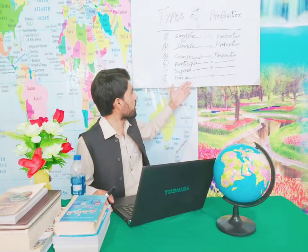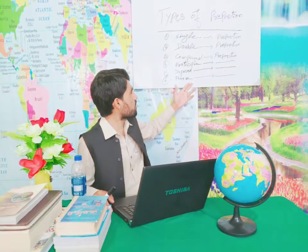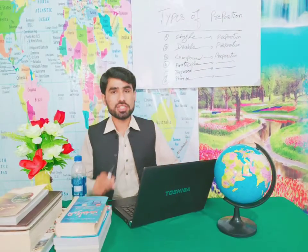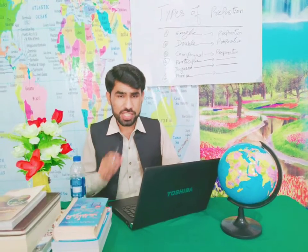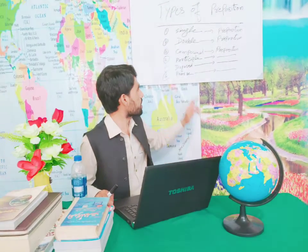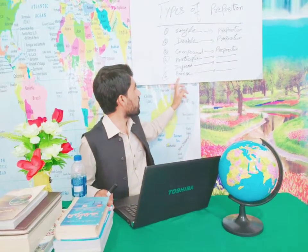इस तरह आगे phrase prepositions आते हैं। Phrase prepositions वो prepositions होते हैं जिसमें दो या दो से ज्यादा compound prepositions phrase की सूरत में पाए जाएं। वह single phrase भी हो सकता है, double phrase भी हो सकता है — वो phrase prepositions कहलाते हैं। और participle prepositions भी इसी सिम्त में हैं।